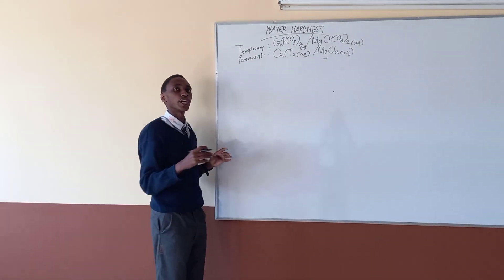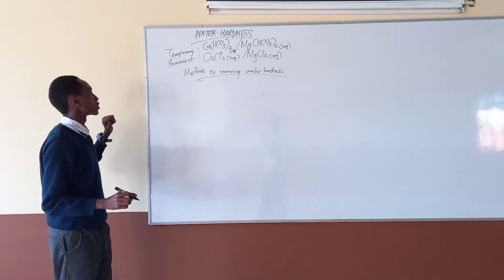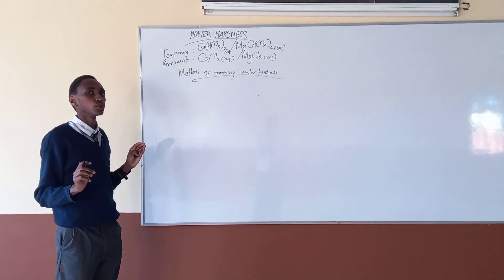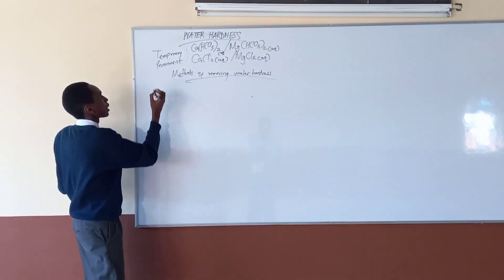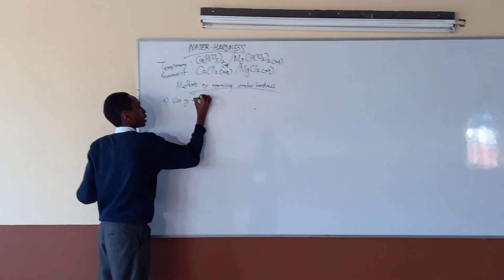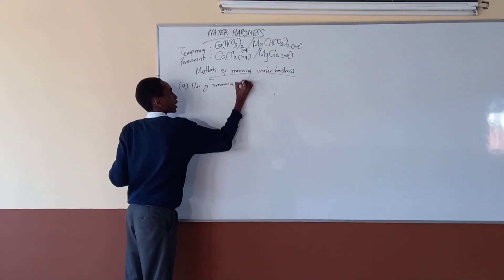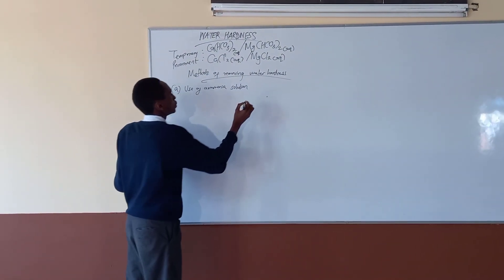There are six ways in which we can remove water hardness. Methods of removing water hardness: for temporary water hardness only, for example, use of ammonia, ammonia solution. This applies to temporary water hardness.